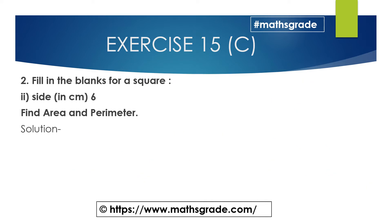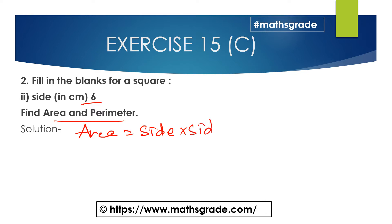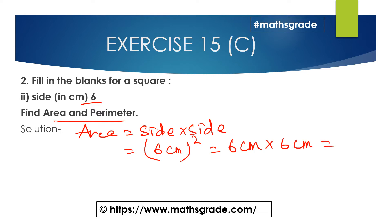Now question number two, second part. The side of the square is given as 6 centimeters. Find the area and perimeter of the square. Area of the square is side multiplied by side. Side is 6 centimeters, so 6 × 6 = 36 square centimeters.